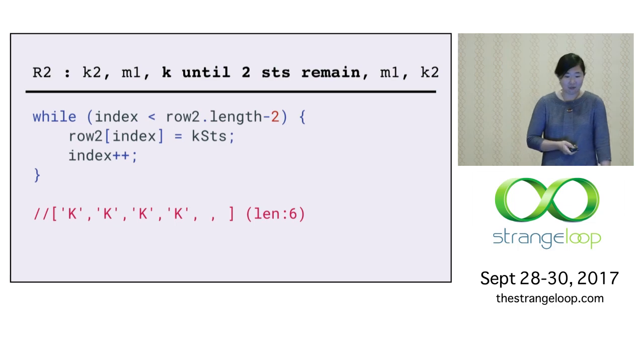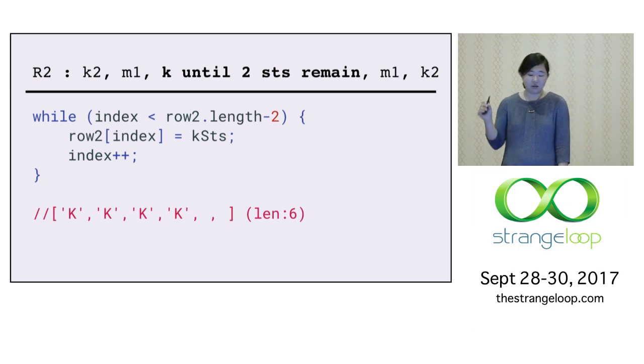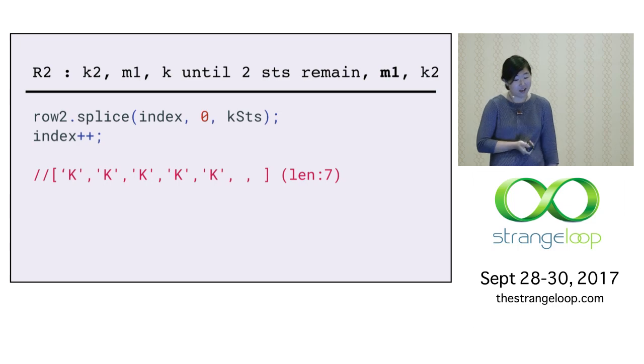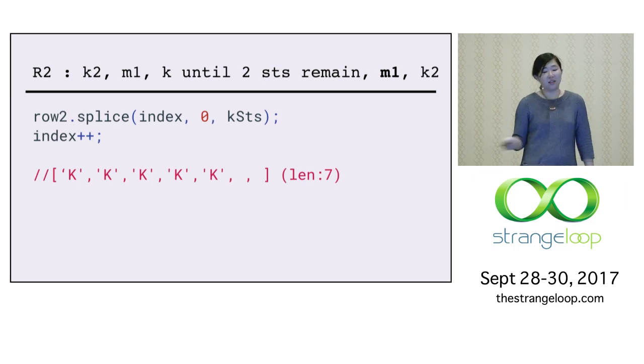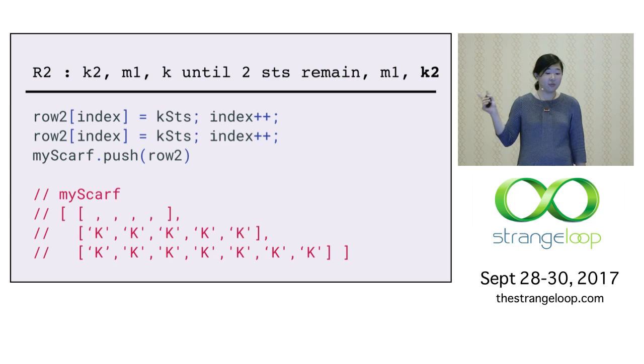So the next one, now that we changed the size of an array, next one is knit until two stitches remaining, which means until the two empty elements left in the array, just put knit stitch into that array. So in this case, it's only adding one knit stitch. But length still remains in six. And there is two empty elements in this array. And comes M1 again. So now we are changing the size of array again. Now the size of array is seven. And then the last one is knit two, filling in those things. So at the end of this procedure, my scarf array has these three rows of starting with nothing of five, to knit five, to knit seven.